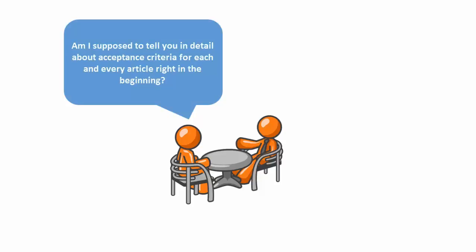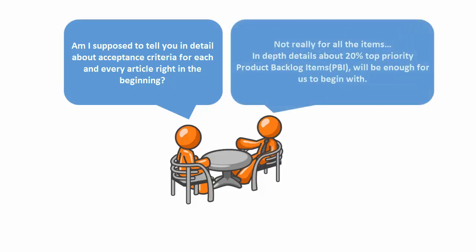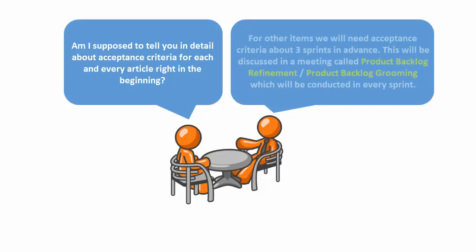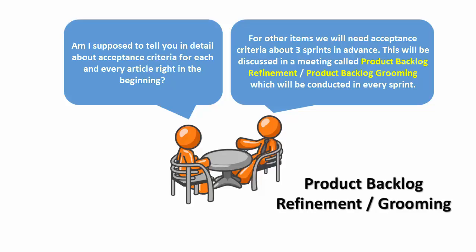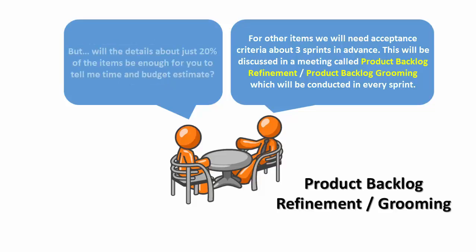Am I supposed to tell you acceptance criteria for each and every item right in the beginning? Not really for all items. In-depth detail about the top 20% priority product backlog items will be enough for us to begin with. For other items, we will need acceptance criteria about 3 sprints in advance. This will be discussed in a meeting called Product Backlog Grooming or Product Backlog Refinement, conducted in every sprint.